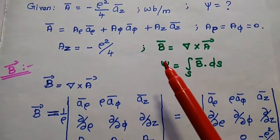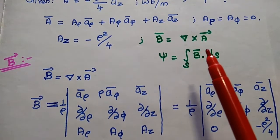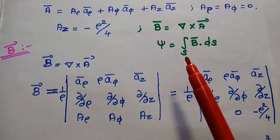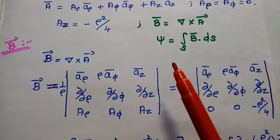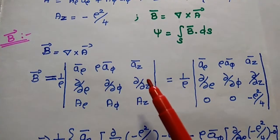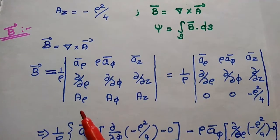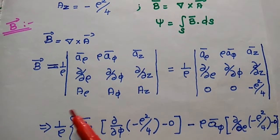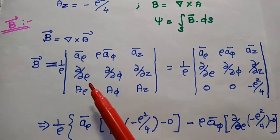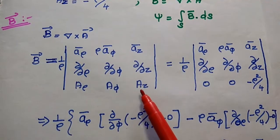First we find the magnetic flux density using the formula B = ∇ × A. In this problem, the vector potential is given in cylindrical coordinates ρ, φ, z, so we use the curl formula in the cylindrical coordinate system. The del cross A vector is written as 1 by ρ times the determinant with âρ, ρâφ, âz in the first row; ∂/∂ρ, ∂/∂φ, ∂/∂z in the second row; and a_ρ, a_φ, and az in the third row.